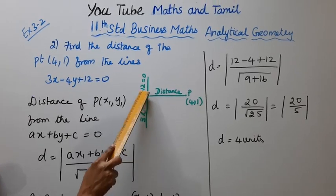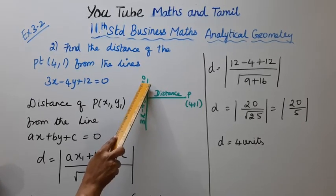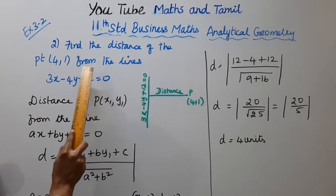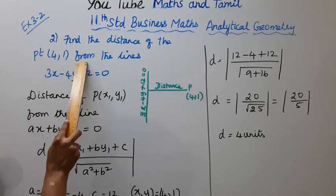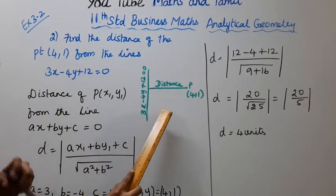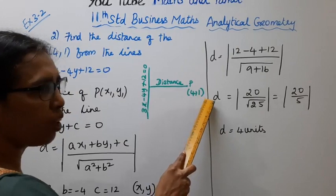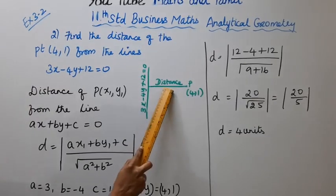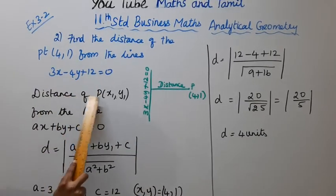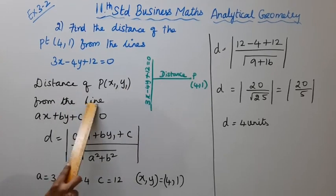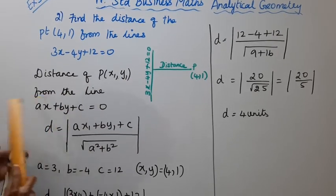This is the line 3x minus 4y plus 12 equal to 0. Distance of the point (4,1) from the line, this is the point (4,1). This is the distance of px1, y1 from the line ax plus by plus c equal to 0.